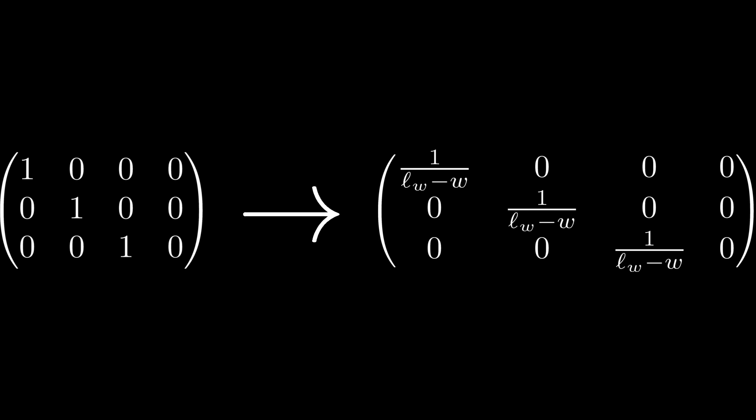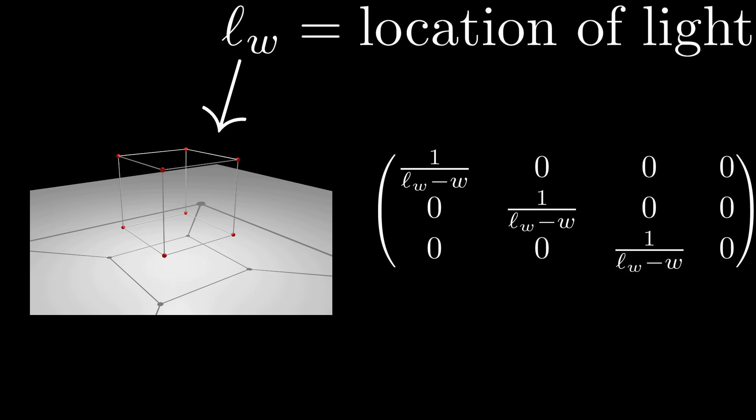Basically, all we need to do is divide every element in the matrix by LW minus W, where LW is the position of the light source on the W axis, and W is the position of the point itself that we are projecting.